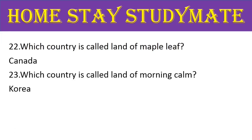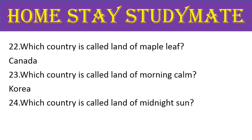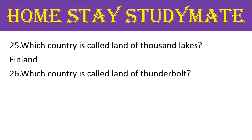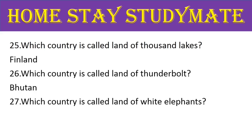Question number 24: which country is called the land of the midnight sun? The right answer is Norway. Next, question number 25: which country is called the land of a thousand lakes? The right answer is Finland. Next, question number 26: which country is called the land of the thunderbolt? The right answer is Bhutan. Next, question number 27: which country is called the land of white elephants? The right answer is Thailand.